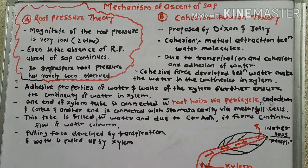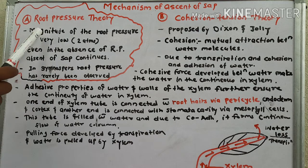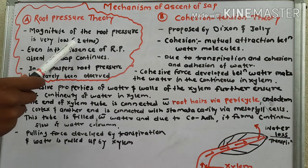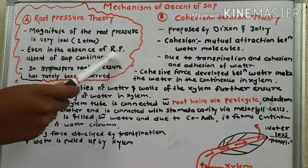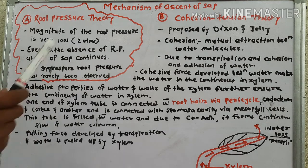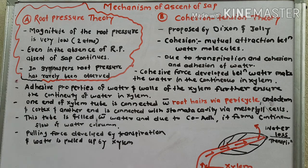Root pressure theory says that root pressure is created, which pulls water upward and drives its movement towards the aerial parts of the plant. However, the magnitude of root pressure is very low, about two atmospheres. Even in the absence of root pressure, ascent of sap continues. In gymnosperms, root pressure has rarely been observed.